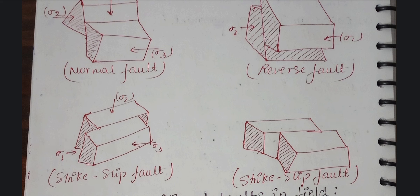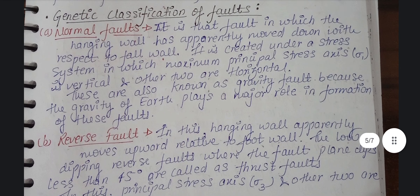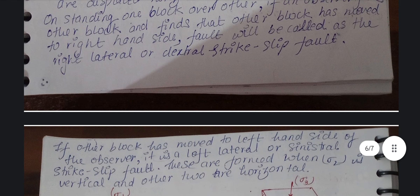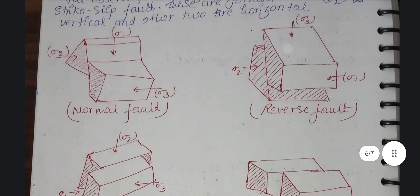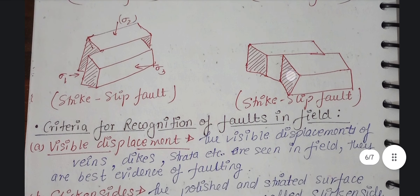In total, genetic classification has three types, and the third type is further divided into two subtypes. This was genetic classification. If you come to the exam, I suggest you draw the diagram for better understanding. If your teacher doesn't understand your language, at least the diagram will show that you have knowledge. In the next video, we will cover criteria for recognition of faults.